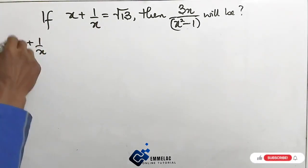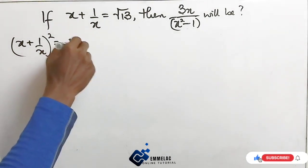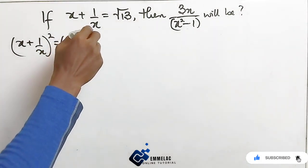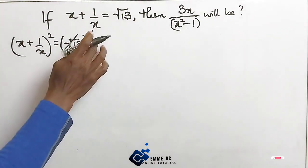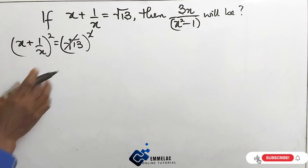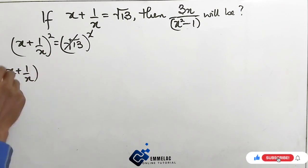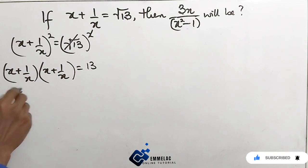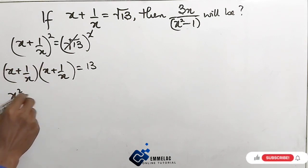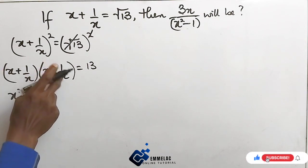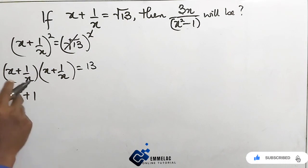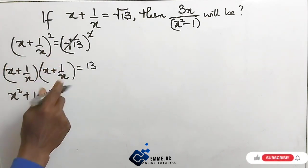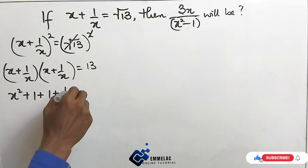So x plus 1 over x, all raised to the power of 2, equals the square root of 13 all raised to the power of 2. And by so doing, this square root will eliminate this square — the power. Now expanding, we have x plus 1 over x, times x plus 1 over x, equals 13. So x times x gives x squared, plus x times 1 over x gives 1, plus 1 over x times x gives 1, plus 1 over x times 1 over x gives 1 over x squared, all equals 13.